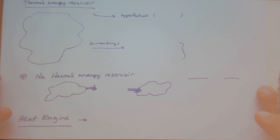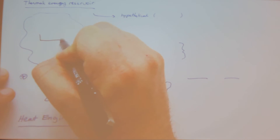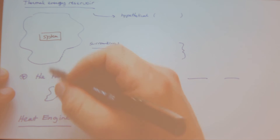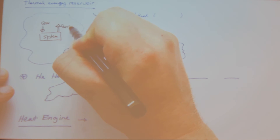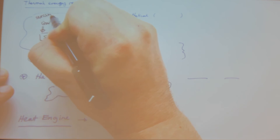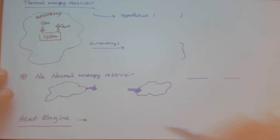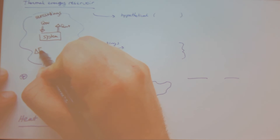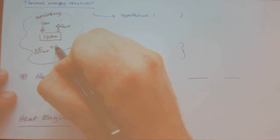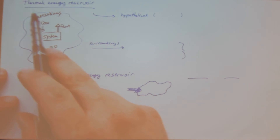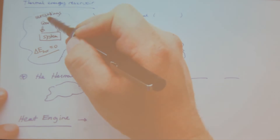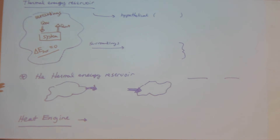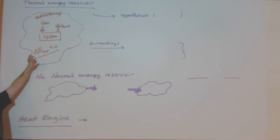Let's draw a schematic: I have a system, I add heat in, I remove heat, and this is my surroundings. I'm going to say that the change in internal energy of my surroundings is equal to zero. I want to talk about a thermal energy reservoir. When I said the internal energy of my surroundings equals zero, really it's not exactly zero, but...